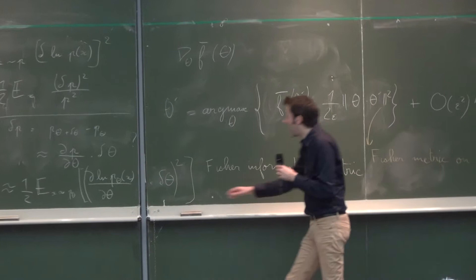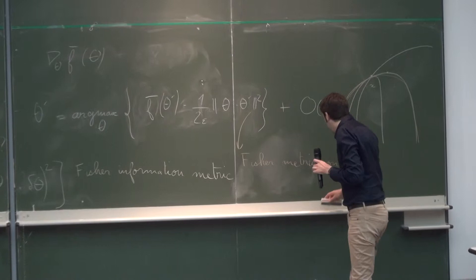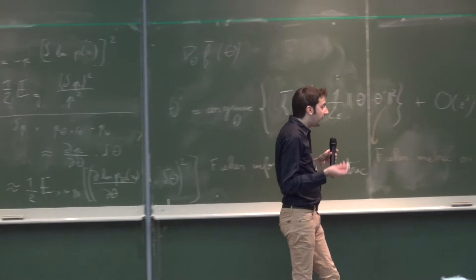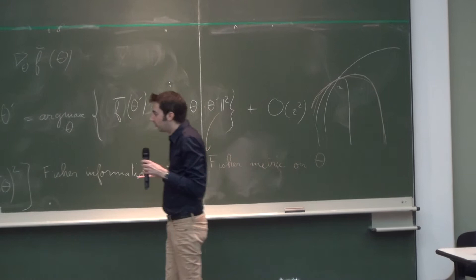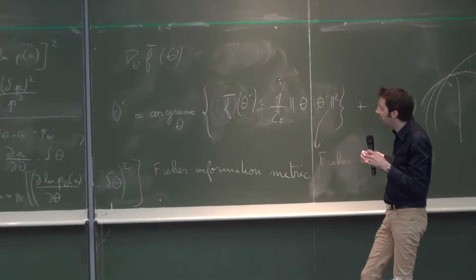Now, what happens if you use this metric for the original black-box optimization problem? My problem was optimizing f(x). I have transferred f(x) to f-bar of theta by using a family of probability distributions on x, and now I have a current guess of theta and I am going to update it. How do you do this in practice?